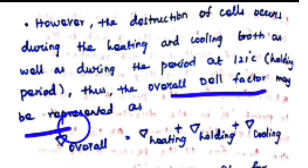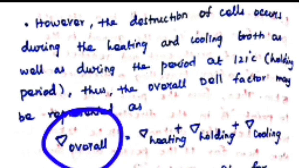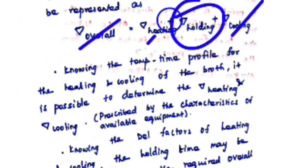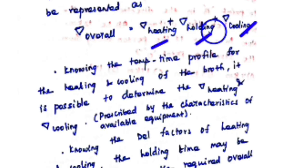The overall Del factor is: ∇_overall = ∇_heating + ∇_holding + ∇_cooling. By knowing the temperature-time profile for heating and cooling — prescribed by the characteristics of the available equipment — it is possible to determine ∇_heating and ∇_cooling. From these, the holding time can be calculated to give the required overall Del factor. Thank you for watching; if you liked this video please like, share, and subscribe.